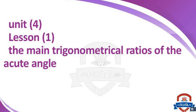What is the meaning of trigonometry? Trigonometry is one of the mathematical branches, and it concerns studying the relation between sides and angles of the triangle. There are trigonometrical ratios of the acute angle: sine, cosine, and tan.